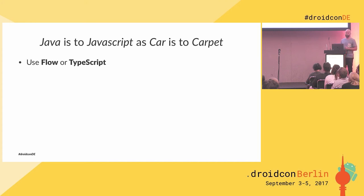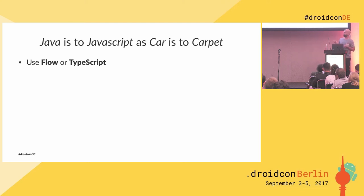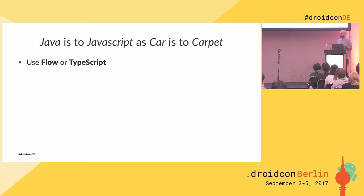One of the most exciting changes for those of us used to Java and static types is you now have a couple of options for bringing types into JavaScript. Flow — another Facebook library, BSD plus patents if you're wondering — gives you some type checking but it's still JavaScript. TypeScript is actually more like another language; it compiles down to JavaScript. You don't ever have to look at that JavaScript, but if you do it's quite readable. TypeScript is what I've been using, and if you're going to use TypeScript then Visual Studio Code plays well with that because they're both from Microsoft.